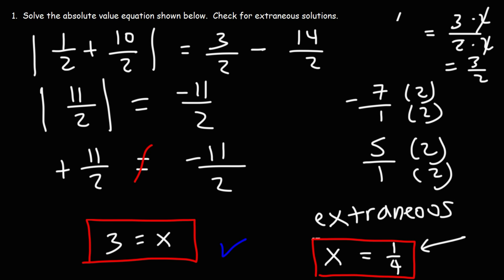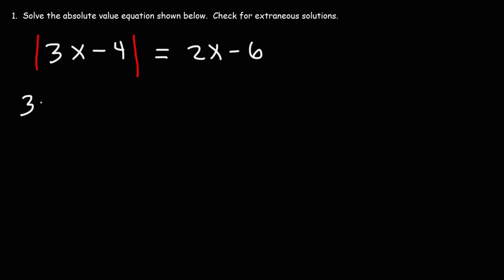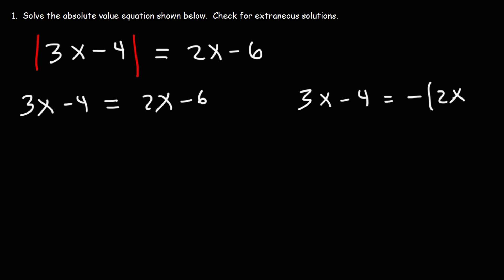That's how you find the extraneous solution when solving absolute value equations. Let's try another example: the absolute value of 3x minus 4, set equal to 2x minus 6. We write two equations: 3x minus 4 equals positive 2x minus 6, and 3x minus 4 equals negative times 2x minus 6.